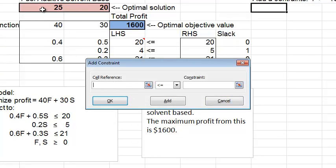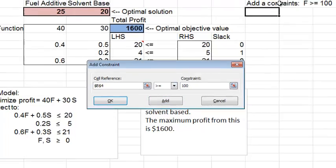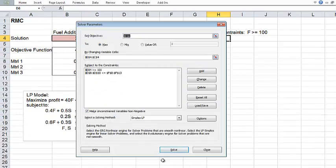Here I refer to the cell that has F value, greater than or equal to, and then enter 100 here for the right-hand side. Say OK, and solve.